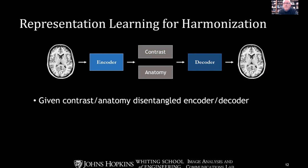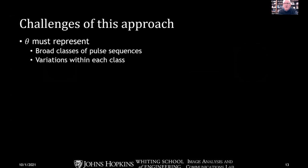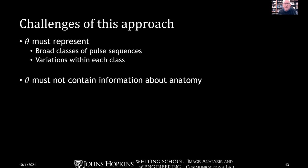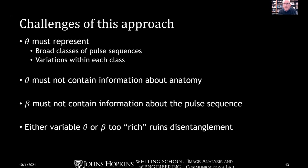Harmonization is a little more subtle. We use the same framework, but we replace the contrast with something not quite as drastic — it changes from a T1 to another T1, but representative of parameters set at a different site. So harmonization requires theta to represent not only broad pulse sequence classes (T1, T2, proton density, FLAIR) but also subtle variations within each class. To be properly disentangled, theta cannot contain information about anatomy (the beta space), and the beta space cannot contain information about the pulse sequence. This requires very constrained latent spaces.